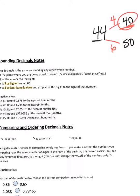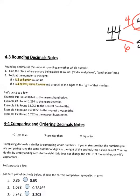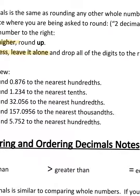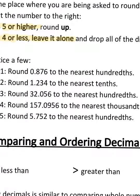Meaning the space that you're rounding to doesn't change. So let's do some practice. We're gonna highlight the space that we're going to and then what the number is next to it. So let's see: round 0.876 to the nearest hundredth.